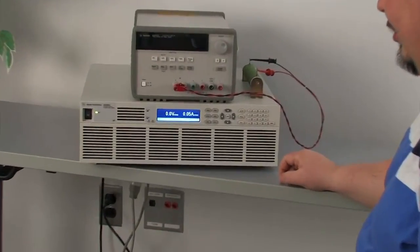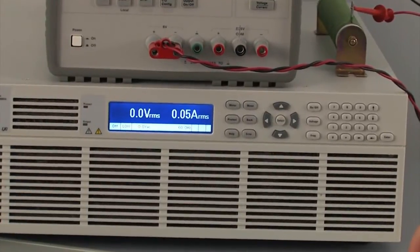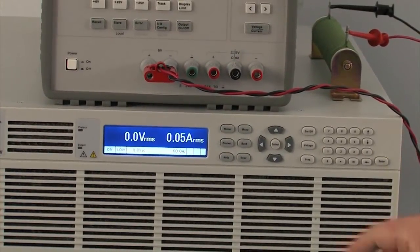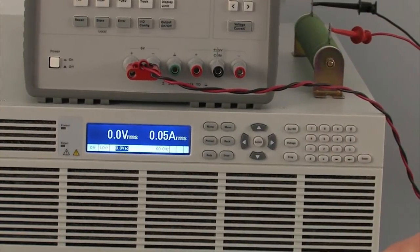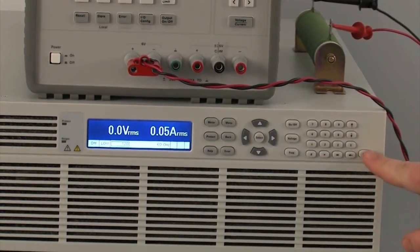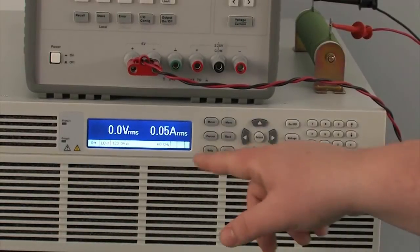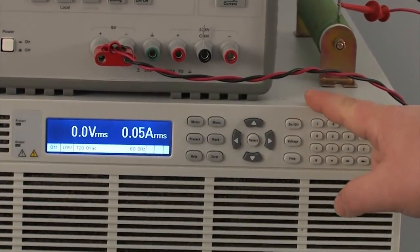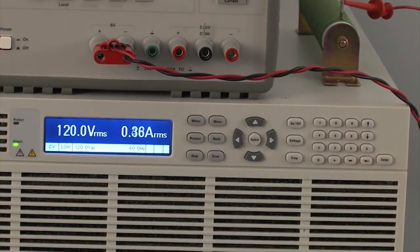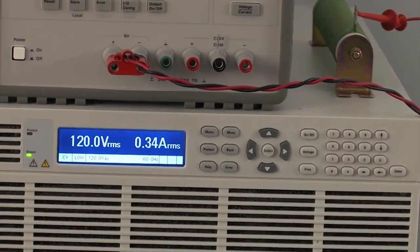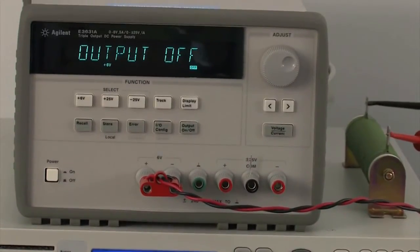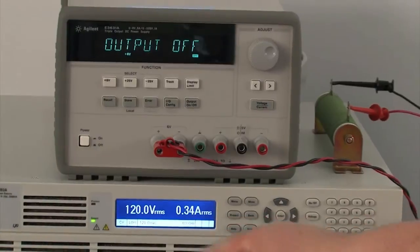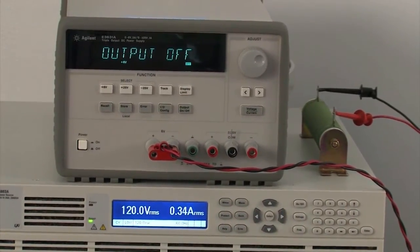So when you start the AC source, the first thing we're going to do is get our DUT running. We're going to set the voltage. This is set up to work in the US, so it's a 120 volt unit and 60 hertz. It's already set to 60 hertz, so we'll leave it at that. I'm going to turn the output on and you can see my DC power supply is turning on. Now that's on, you can see that it's 120 volt output and it's measuring about 340 milliamps RMS current draw.